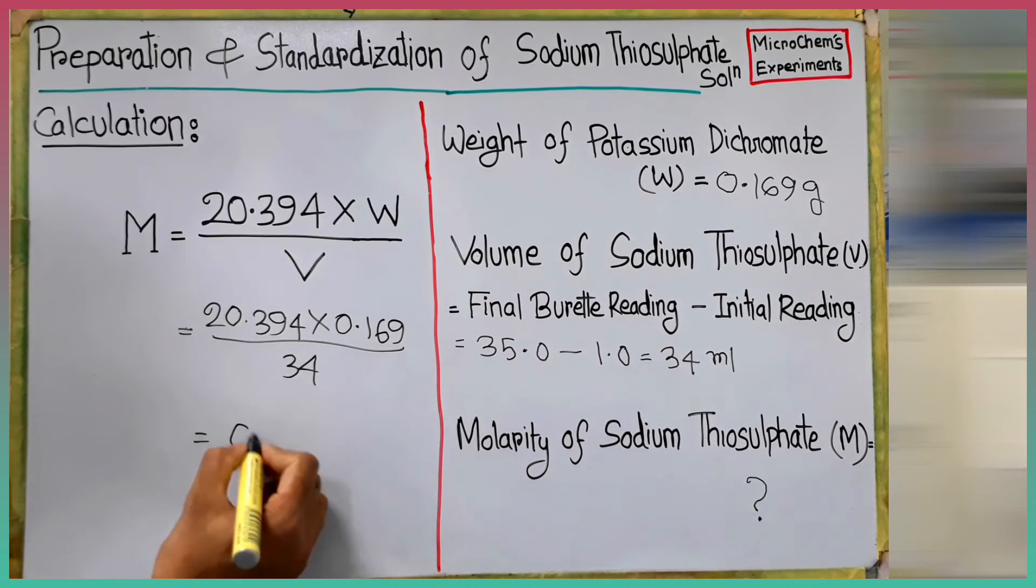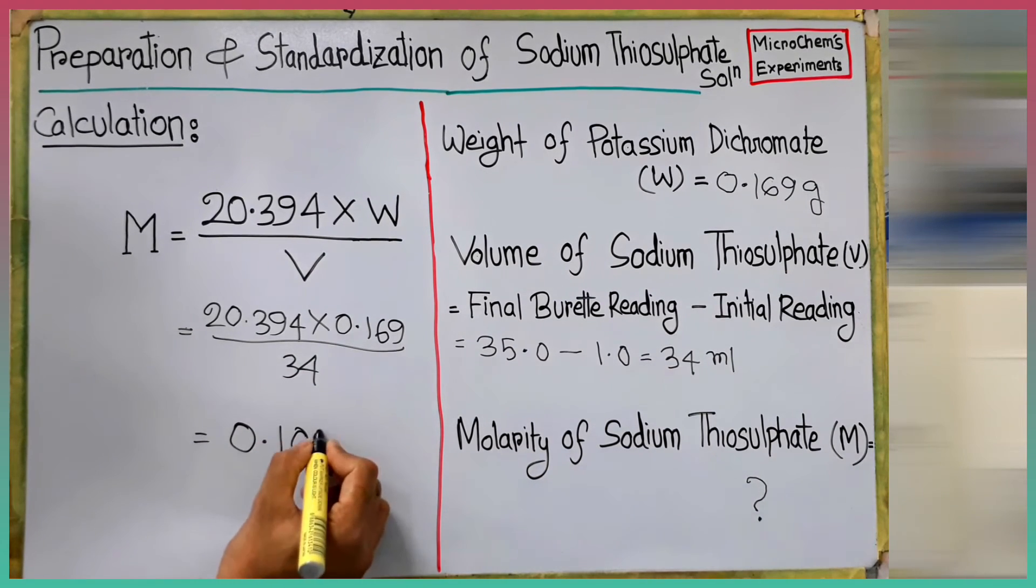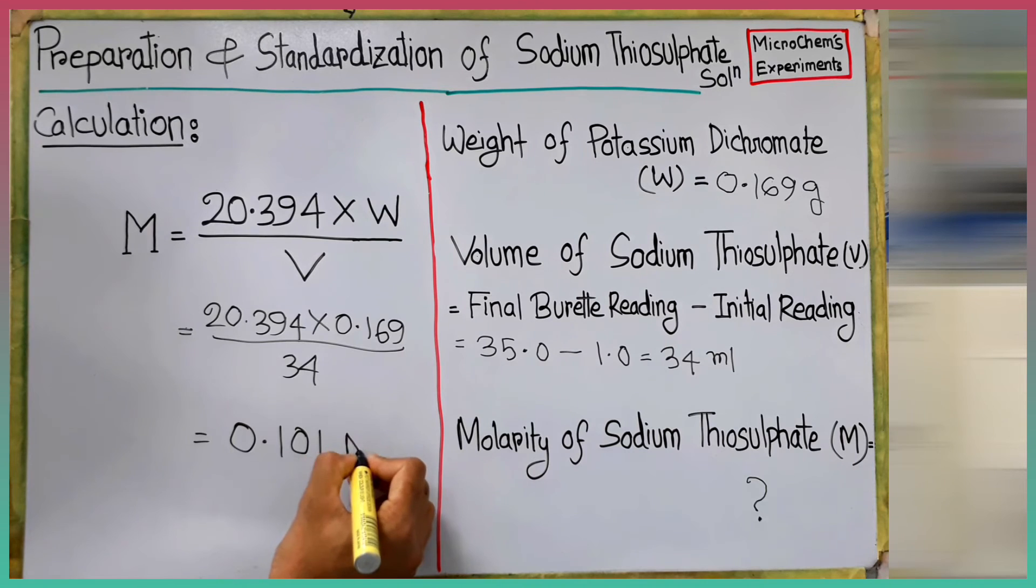By solving the equation, we get the actual molarity of the sodium thiosulfate solution is 0.101 molar.